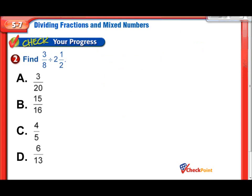Our next problem: 3 eighths divided by 2 and a half. Let's use that keep, change, flip again. So we're going to keep this first fraction. Oh, you know what? This is a mixed number, so we need to make this improper first.